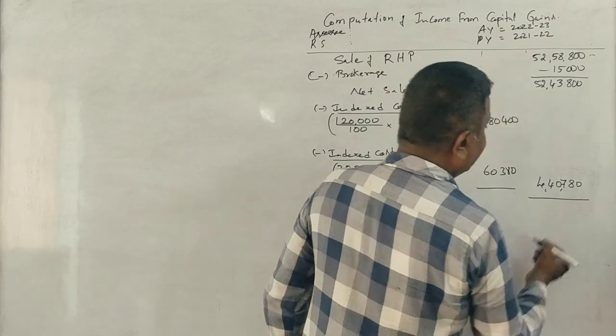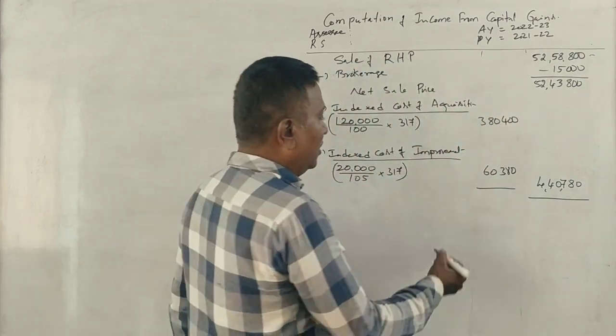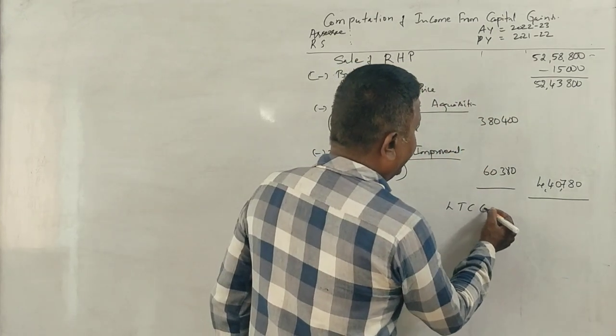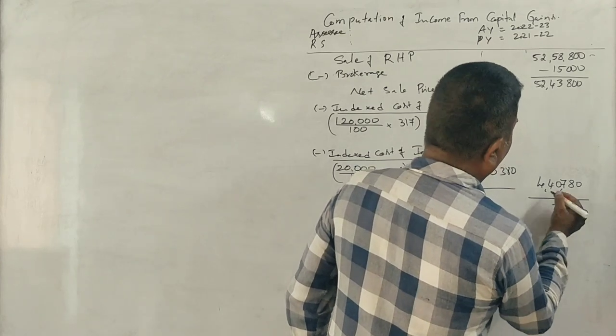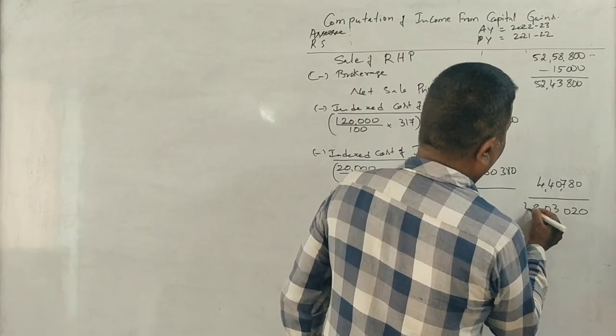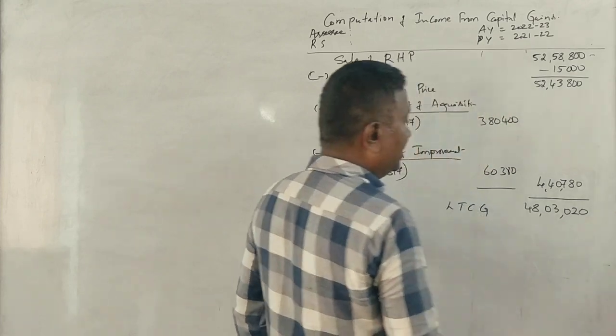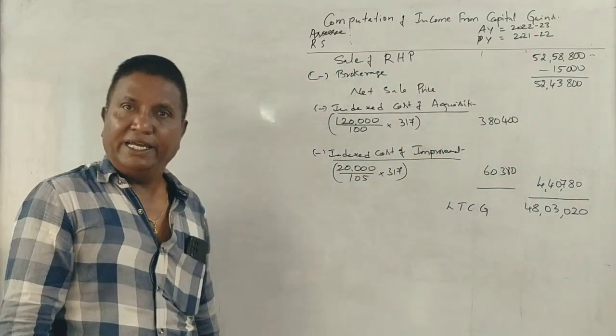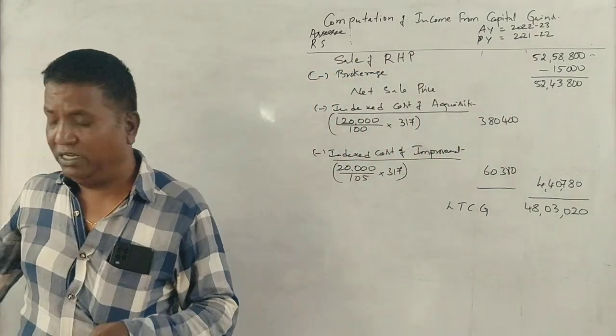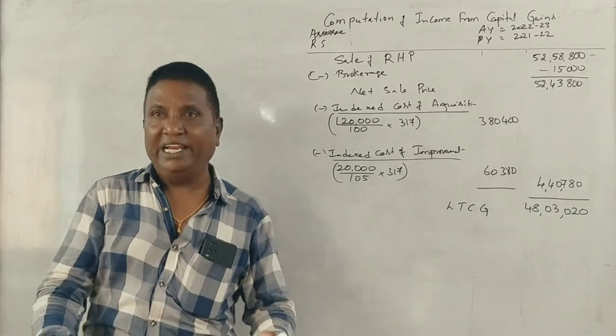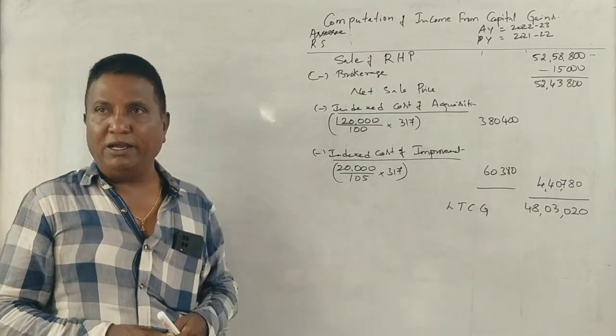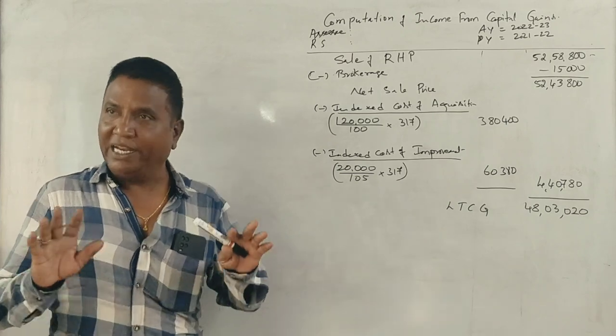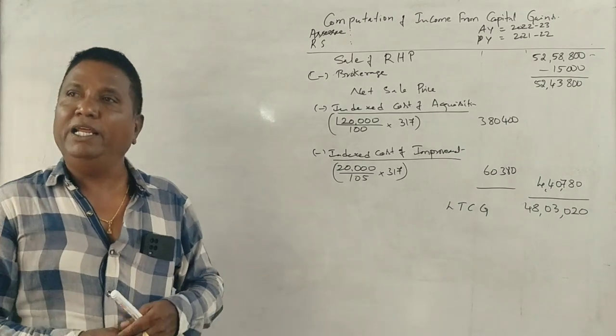This gives us Rs. 4,40,780. So the long term capital gain is Rs. 48,03,020.